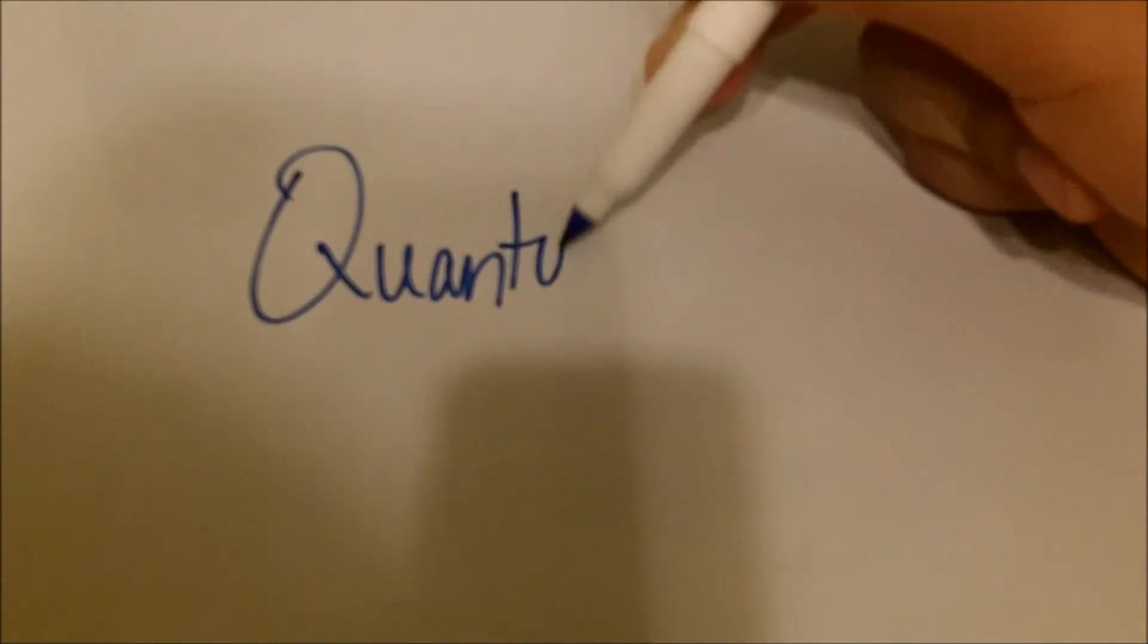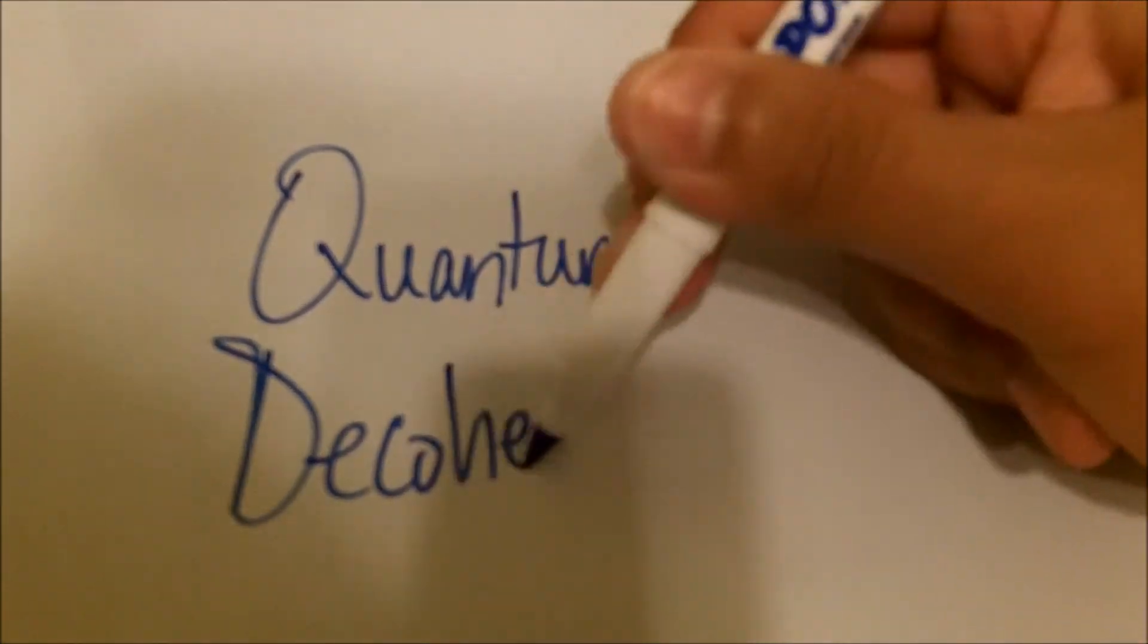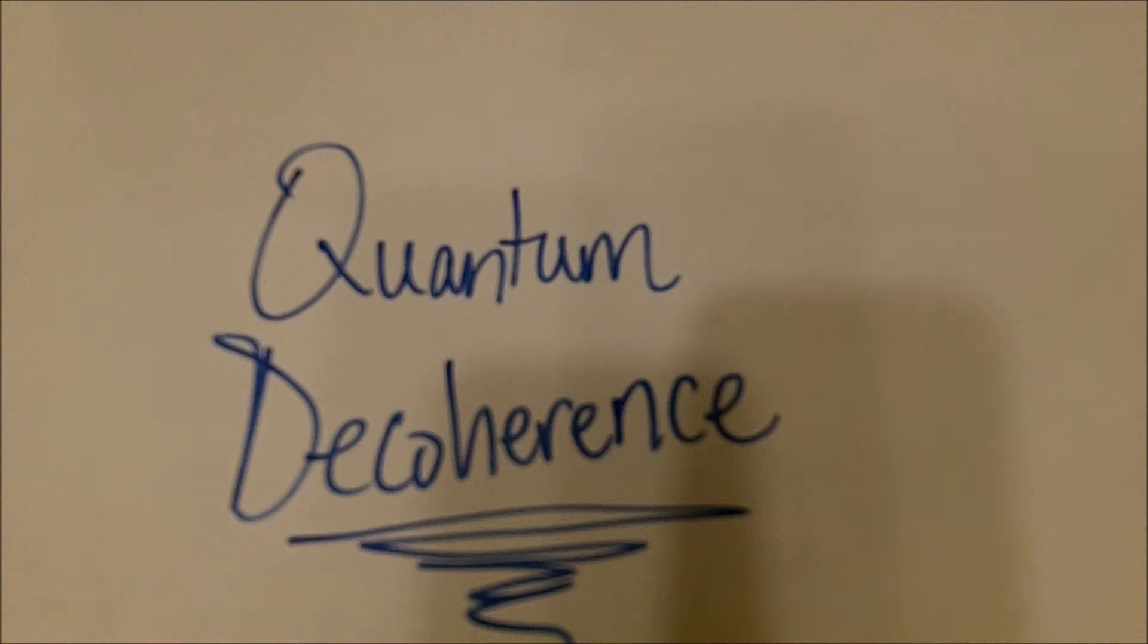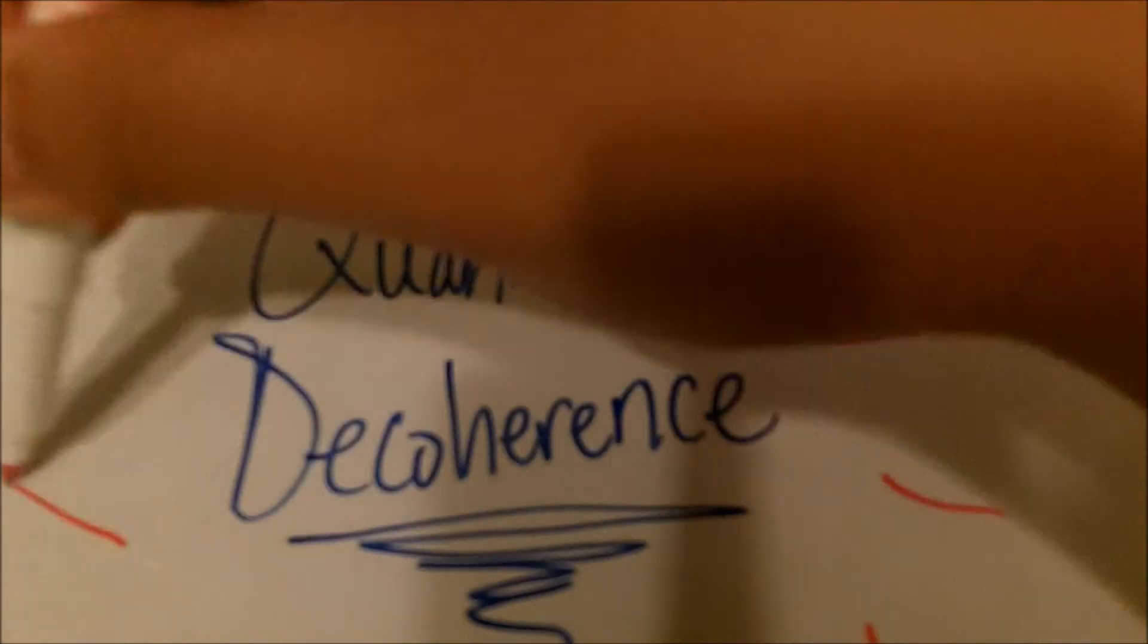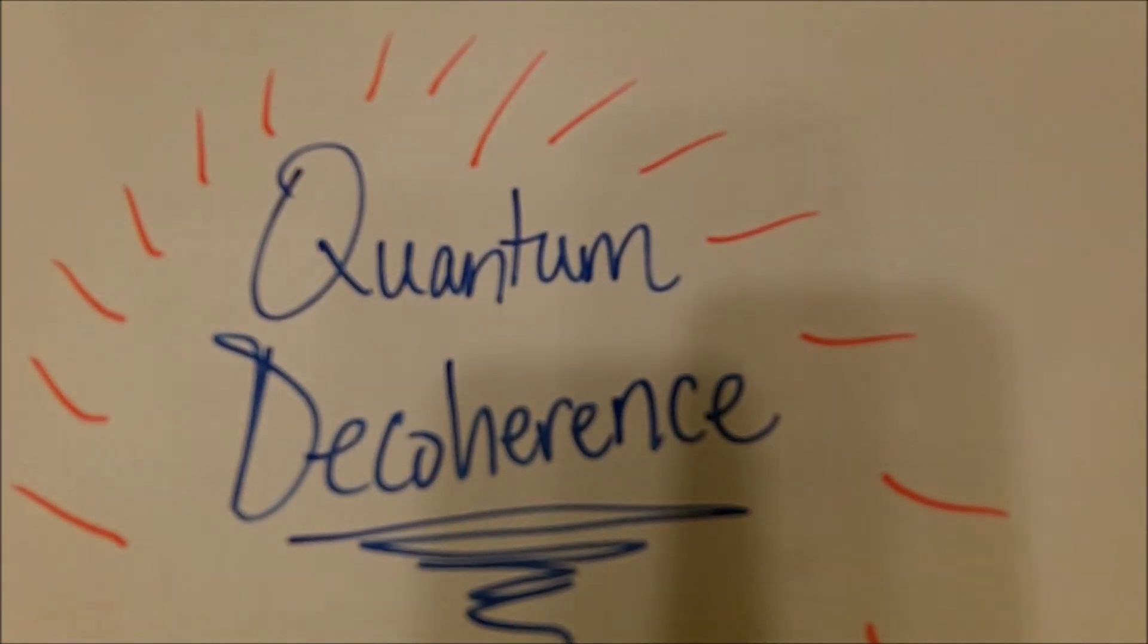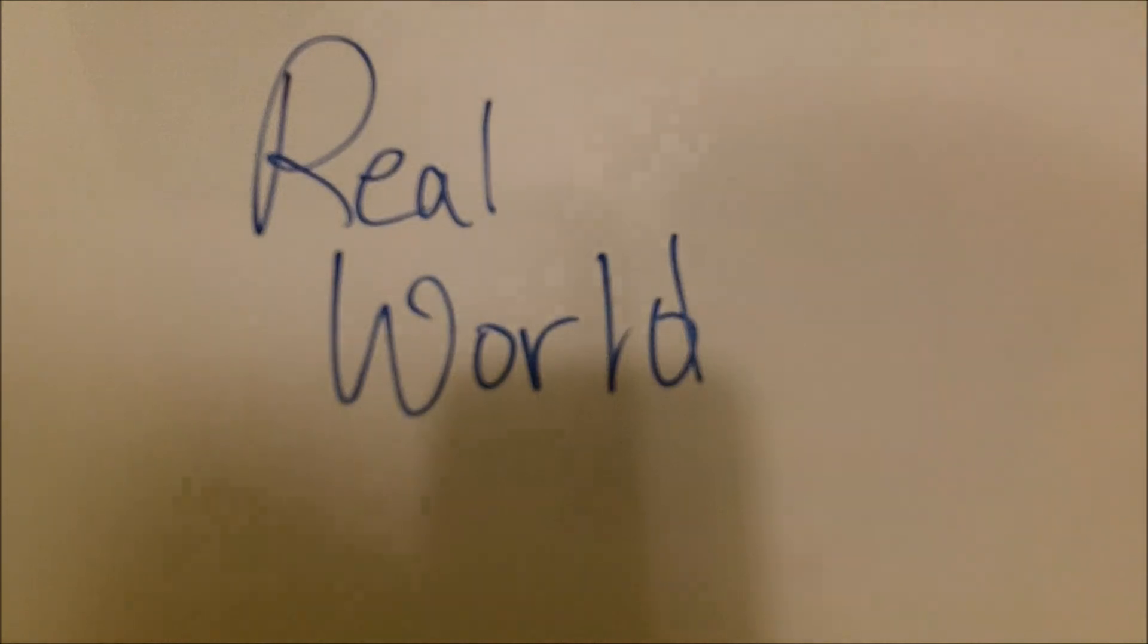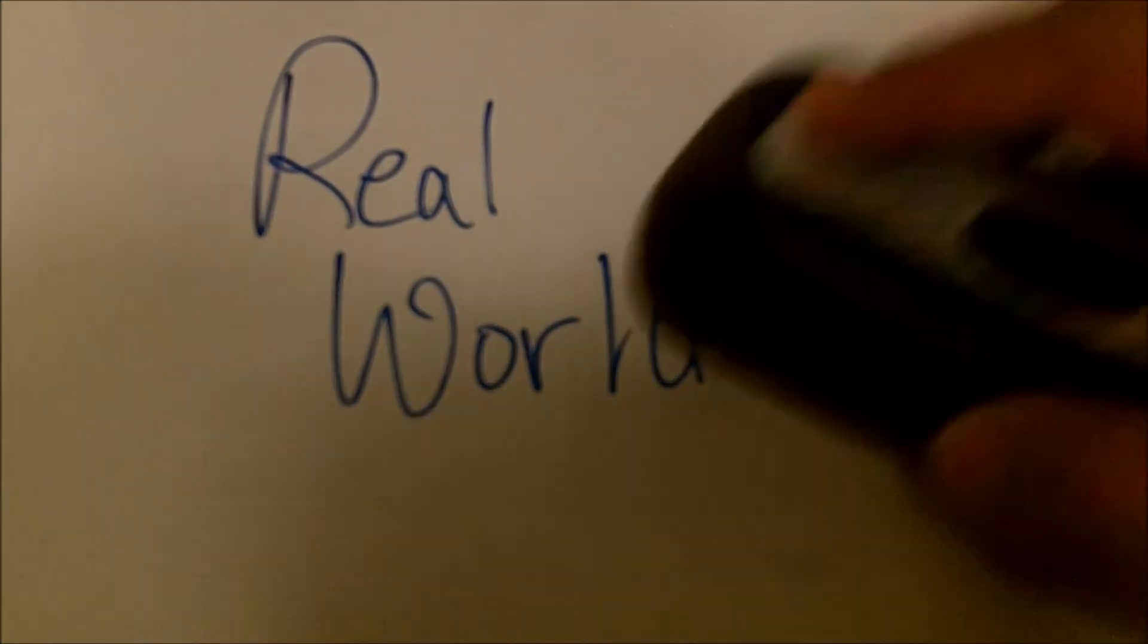Now let's talk a little bit more about quantum decoherence. As previously stated, it is the theory that accounts for the loss of coherence on the quantum level. Now as stated, we're probably too big. We are definitely too big to experience things on the quantum level. However, one could argue that we experience it in everyday life. So let's look at an example.